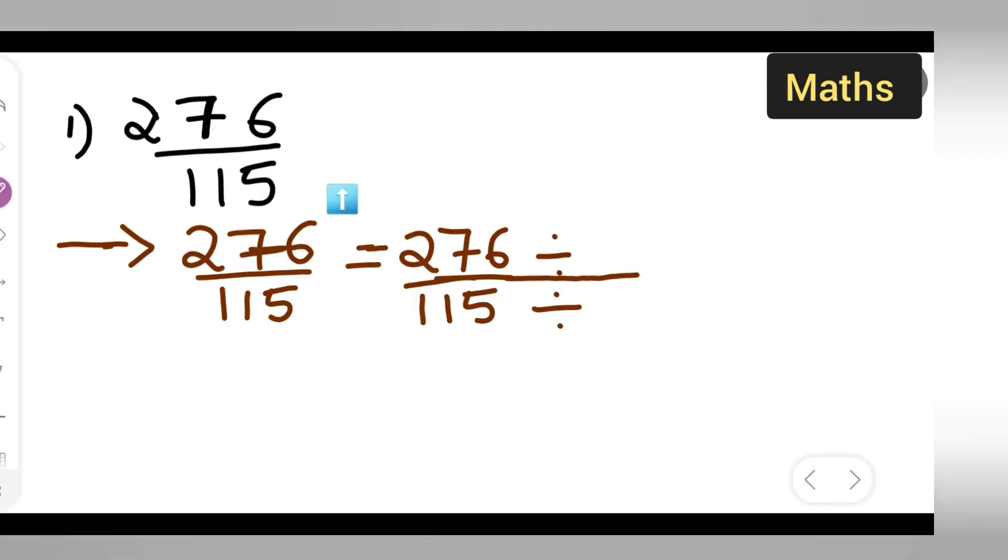So that 23 is going to divide both. Now, 23 times 1 is 23, 23 times 2... You will get 12 upon 5.